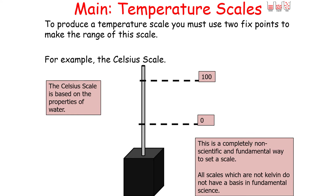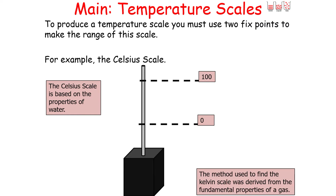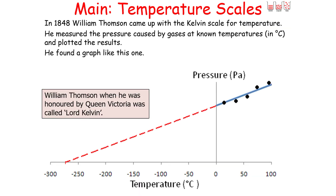All temperature scales which are not Kelvin do not have a basis in fundamental science. The Kelvin scale was derived from fundamental properties of gas. In 1848, William Thomson — later honoured as Lord Kelvin by Queen Victoria — came up with the Kelvin scale for temperature.